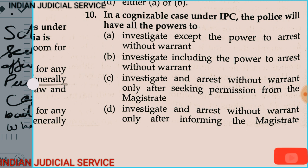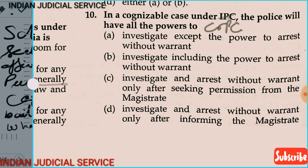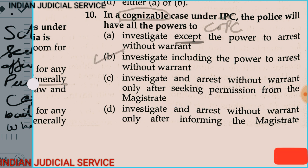Question 10: In a cognizable case under CrPC, the police will have all the power to investigate. The options include: investigation excludes the power to arrest without warrant; investigation includes the power to arrest without warrant; investigate and arrest without warrant after seeking permission of magistrate; investigate and arrest without warrant only after informing the magistrate. Option B is correct — because in a cognizable offense, the police officer can arrest without warrant and without permission of the magistrate, and cognizable offenses are classified in Schedule 1.